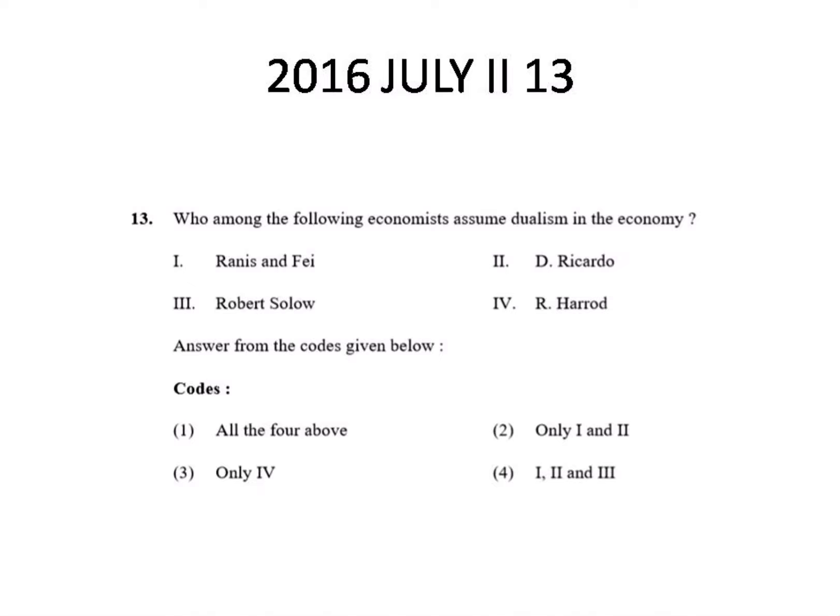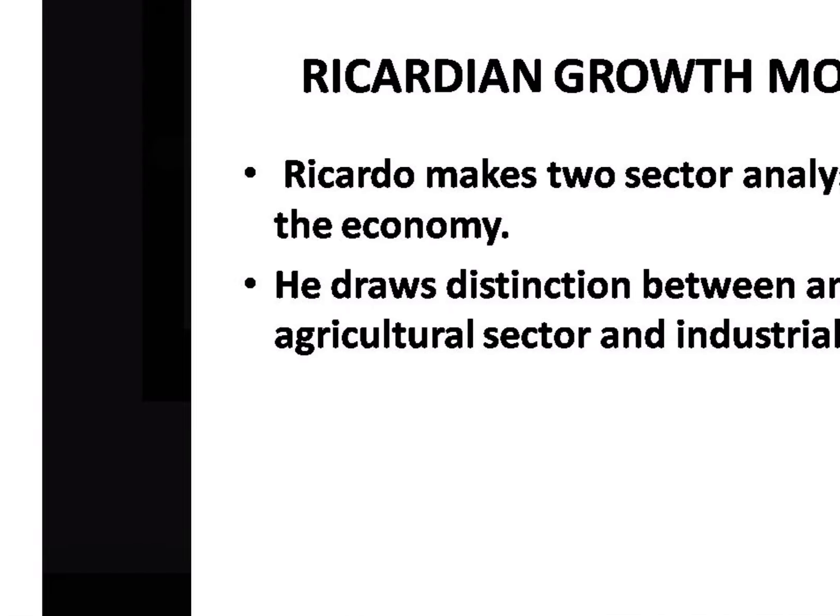This question was asked in 2016, July, Paper 2. The question is: who among the following economists assumed dualism in the economy? Ranis and Fei assumed dualism in the economy, and according to Ricardo, dualism is also assumed. Although Solow and Harrod also laid out sectors in the economy, they did not assume dualism in the same way. So the correct option is only first and second.